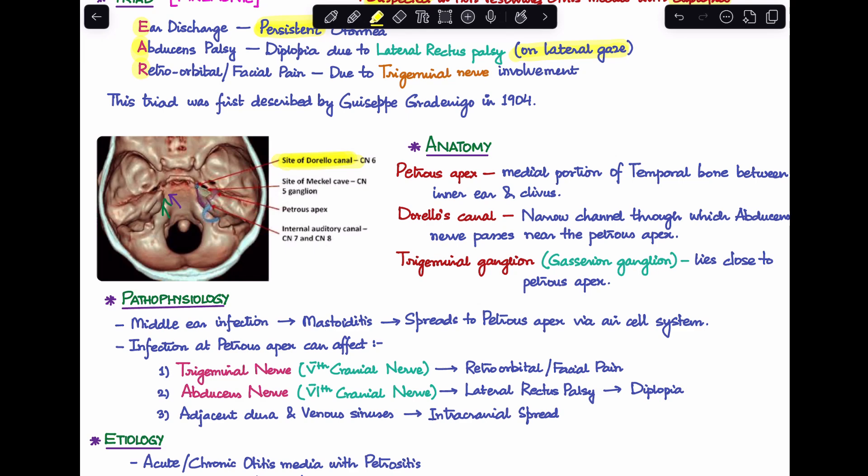Second thing is the trigeminal ganglion, also known as the Gasserian ganglion. This also lies close to the petrous apex. Because of these two structures lying close to the petrous apex, we end up seeing the features that I have mentioned above.